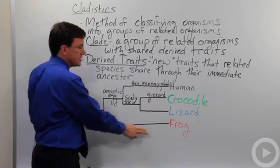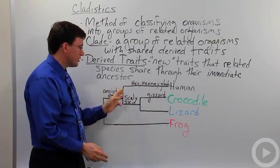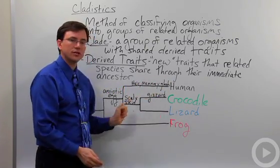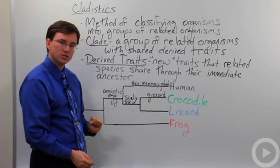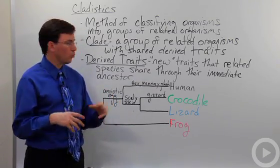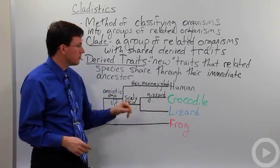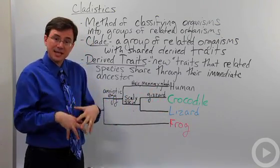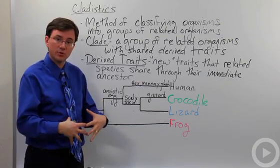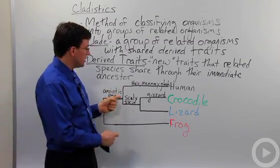From that, we can see the frogs. But a derived trait that all these organisms share that aren't shared with the frog is the amniotic egg, whether it's the shelled eggs of lizards and crocodiles or the amniotic sac that humans use to help keep their child alive inside the uterus.